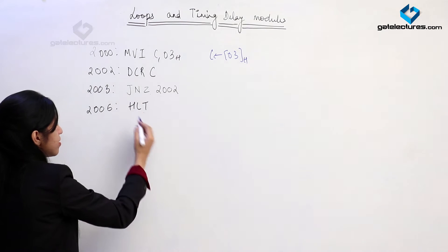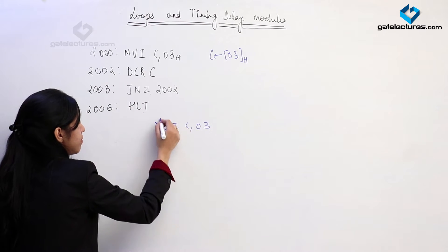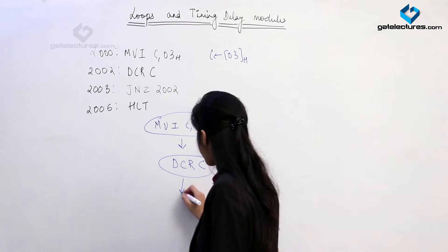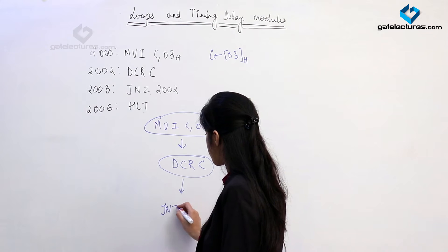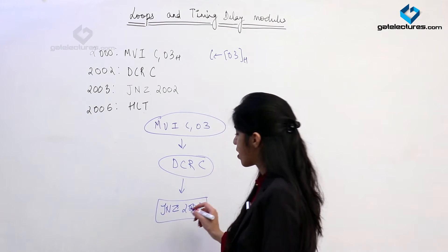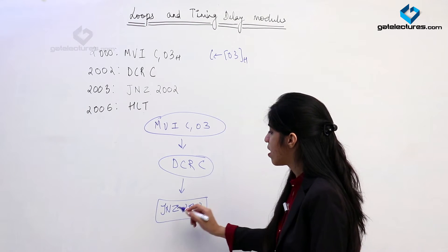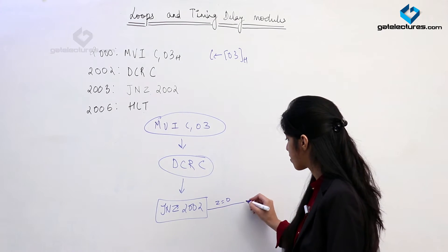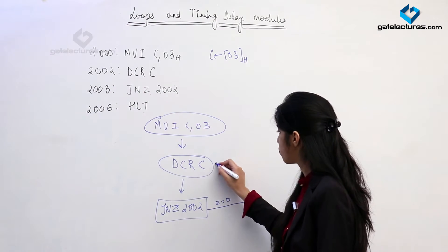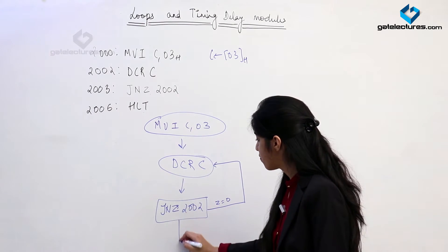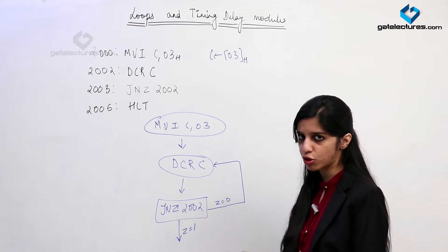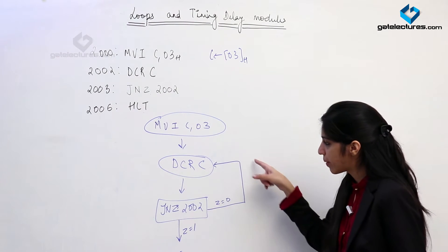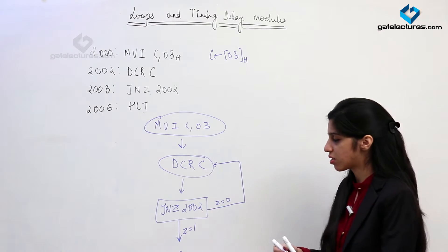Let me represent this. First instruction is MVI C, 03. Then we perform DCR C. Then we check with jump not zero, JNZ 2002. Here we check the zero flag. Not zero means the Z flag is 0 - jump to 2002, which means jump back to DCR C. If the Z flag is 1, that means the condition is not true, so the program is going to stop.